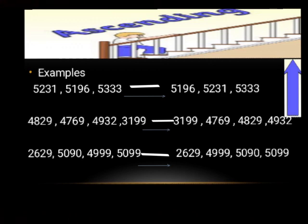Students, in ascending order, we arrange numbers from smallest to the largest. So in this example, the smallest 4 digit number is 5196. Then the next number is 5231.